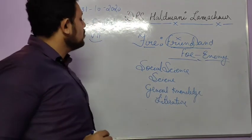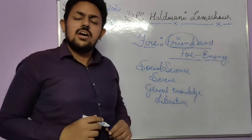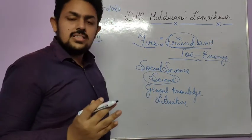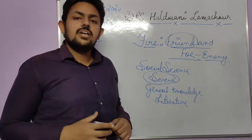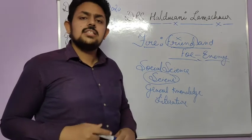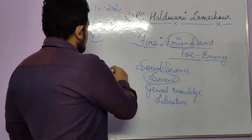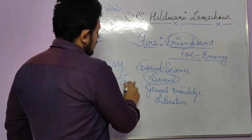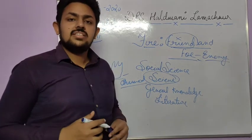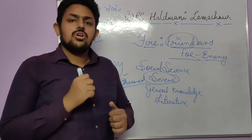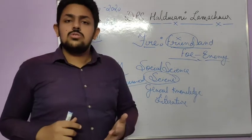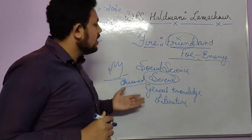How is it related to social science, science, GK, and literature? I will tell you. First of all, let's talk about science. Fire is a phenomenon of science — it is a process that we learn in physics and chemistry. How fire takes place through a phenomenon related to chemistry — when you put stones together, the way early humans did, they got fire. Using some chemicals can also produce fire.